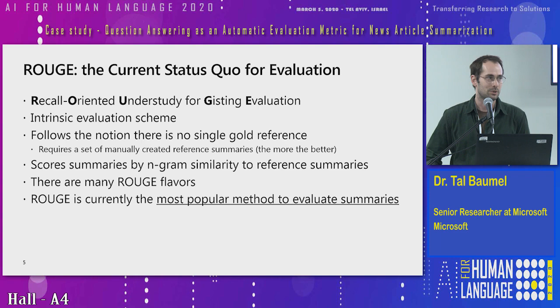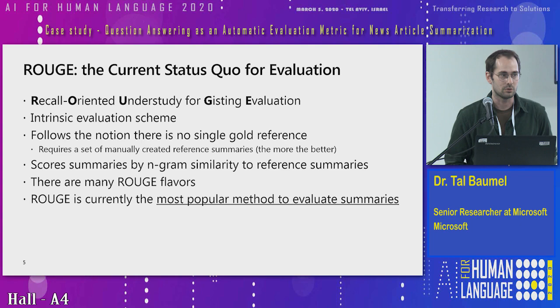In the original paper, they gather as many manual summaries as they can and find that ROUGE correlates with human evaluation if you just find the common n-grams between the manual summaries and the automatic summary. When you have more manual summaries it correlates better — they suggest the best number is about four, going up to ten. It's currently the most popular method, and everyone compares to that result.